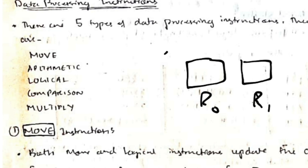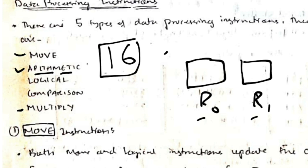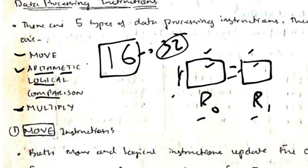There are five types of data processing instructions. The first is Move — moving data from one register to another. The second is Arithmetic, covering addition and subtraction. Multiplication is treated separately because adding or subtracting two 16-bit numbers gives roughly a 16-bit result, but multiplying two 16-bit numbers may produce a 32-bit result, so it's handled differently. Logical and Comparison instructions check whether values are greater than, equal to, or not equal to each other.